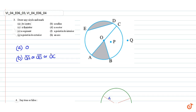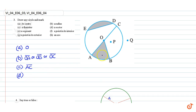Part C: a diameter. Since AC passes through the center of the circle O, AC is a diameter of the circle. Part D: a sector. AOB is a sector of the circle — the shaded region represents the sector, therefore AOB is the answer. Part E: a segment. ED is a segment of the circle — the shaded region represents it, therefore ED is the answer.